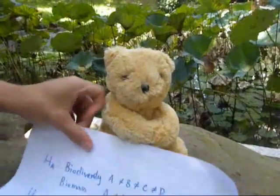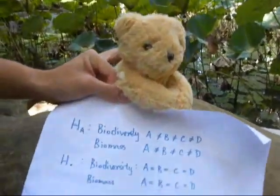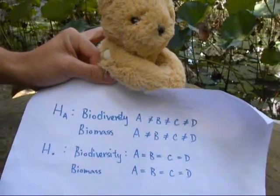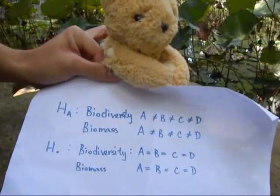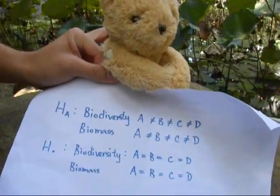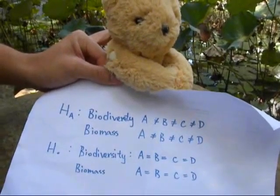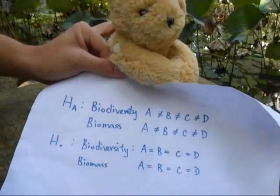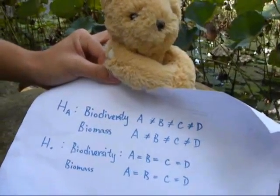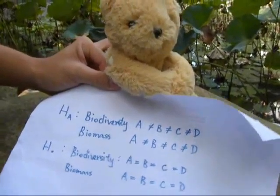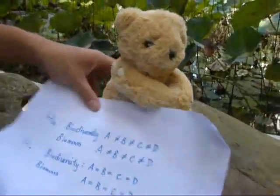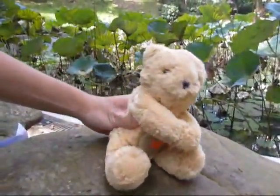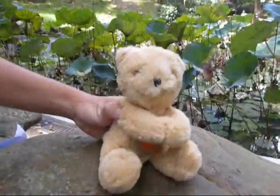Our hypothesis is that the biodiversity and the biomass of A, B, C, D are not the same. And our null hypothesis is that the biodiversity and the biomass of A, B, C, D are equal. In this video, we are going to discuss the methods and statistical tools we used in the study.